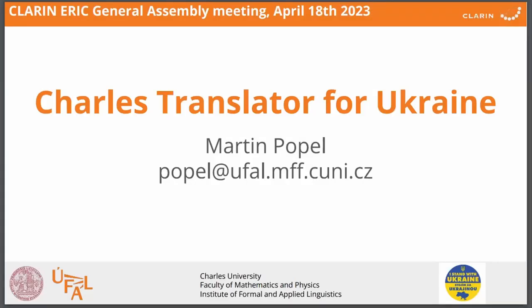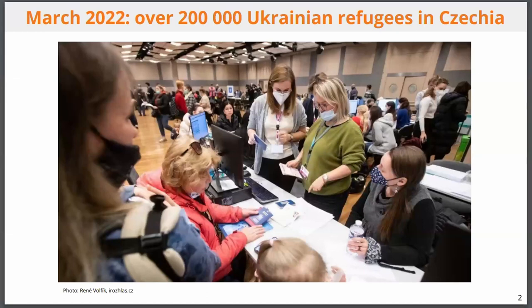Before describing the work on the translator, let me go back more than one year. You all know what happened in February with Russia's war on Ukraine. In March, refugees started going to other countries including the Czech Republic. During March there were more than 200,000 Ukrainian refugees going to Czechia. In the beginning it was quite crowded — people didn't know what to do, and there were many volunteers wanting to help. One of the biggest obstacles, from personal experience and news coverage, was language barriers. For example, in refugee registration centers, there were not enough Czech volunteers who could speak Russian or Ukrainian.